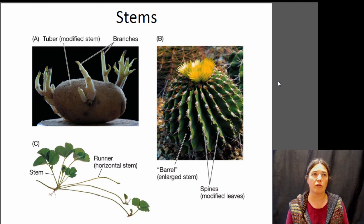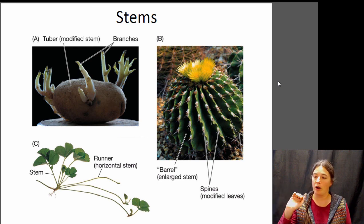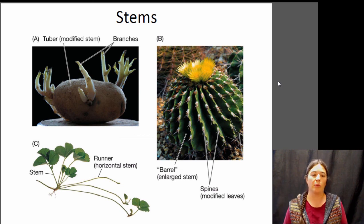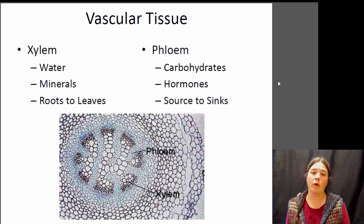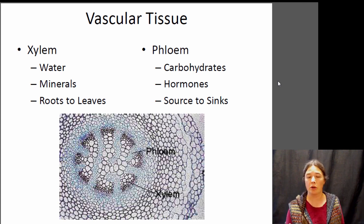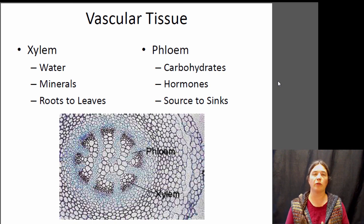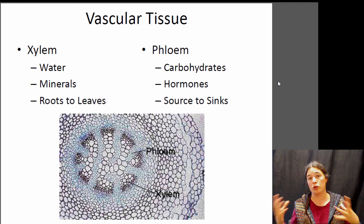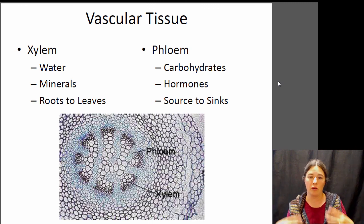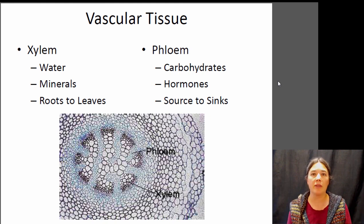Some stems are specialized for storing water — cactuses are basically very enlarged stems. There are also stems specialized for reproduction, like the little runners on a strawberry plant, each with a new little plant at the end. Stems are really important for the transport of materials around the plant. Within stems there are two types of transport tissue: xylem, which transports water and minerals, and phloem, which transports food — carbohydrates and hormones. The xylem generally brings water from the roots to the leaves, and the phloem brings sugars from wherever they're produced to wherever they're needed — from sugar sources to sugar sinks. We'll talk more about these tissues in the plant transport lecture, which is next.